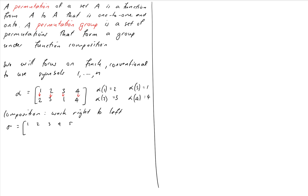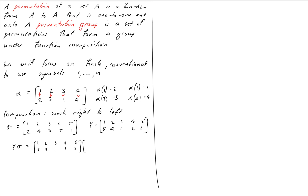Sigma maps 1, 2, 3, 4, 5 to 2, 4, 3, 5, 1 respectively. Gamma maps 1, 2, 3, 4, 5 to 5, 4, 1, 2, 3. The question is: what is gamma composed with sigma? We write them in order — gamma on the left, sigma on the right — and the result will map 1, 2, 3, 4, 5 to whatever we calculate.